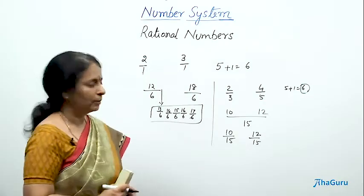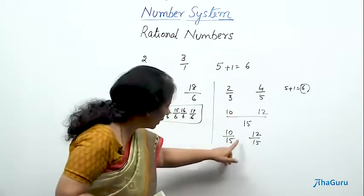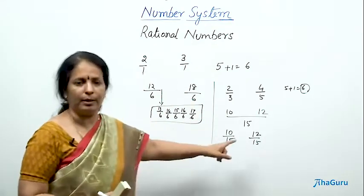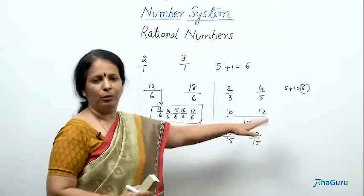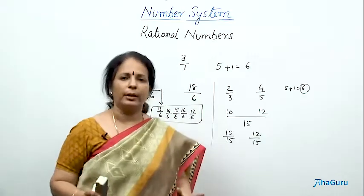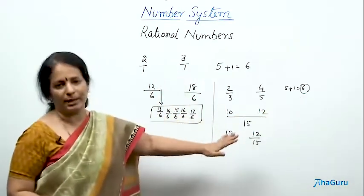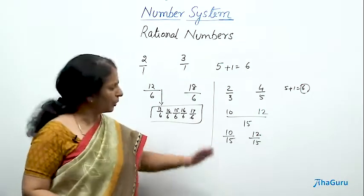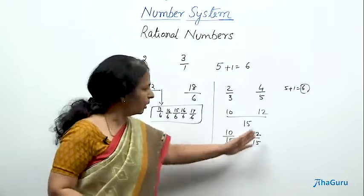These two are the fractions. You have to find numbers between them. By looking at it, I can find 1 very easily. That is 11 by 15. Because 10 by 15, then there is 11 by 15, which I can find. But what about other numbers? There are infinite numbers between them. Of course, not all of us will find the same infinite number. But if you follow this method, probably all of you will get the same answer. Not that it is wrong. You can try any way you feel like.